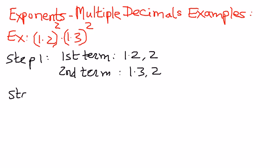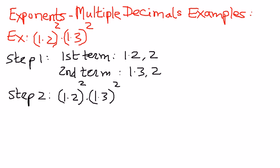In step number 2, we're going to apply the concept. The concept is: the number of times the base term needs to be repeated is given to us in the exponential term. So we're going to expand the first term based on its exponent and the second term based on its exponent. We write the problem: 1.2 raised to the power of 2 times 1.3 raised to the power of 2. We will expand the base term 2 times — 1.2 times 1.2 — that is the first term.